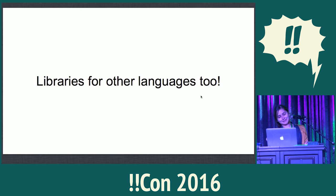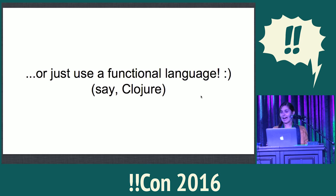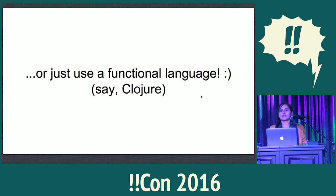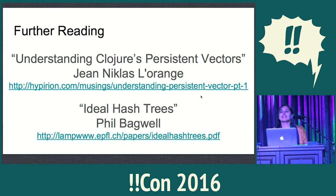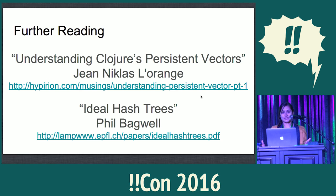For example, there's PySystems for Python, because puns are great. If you don't want to use libraries, you could try using a functional language like Clojure, which has these things built right in. What I've been talking about — these trees or tries — is inspired by the way they're implemented in Clojure, which Rich Hickey designed based on a paper by Phil Bagwell called Ideal Hash Trees, which implements data structures like vectors and hash maps. That's good further reading. I also highly recommend a series of blog posts by Jean-Nicolas Larange called Understanding Clojure's Persistent Vectors, which explains a lot more of the optimizations. Persistent data structures are really exciting, and if you want to get into functional programming, you should use them, because immutability rocks.